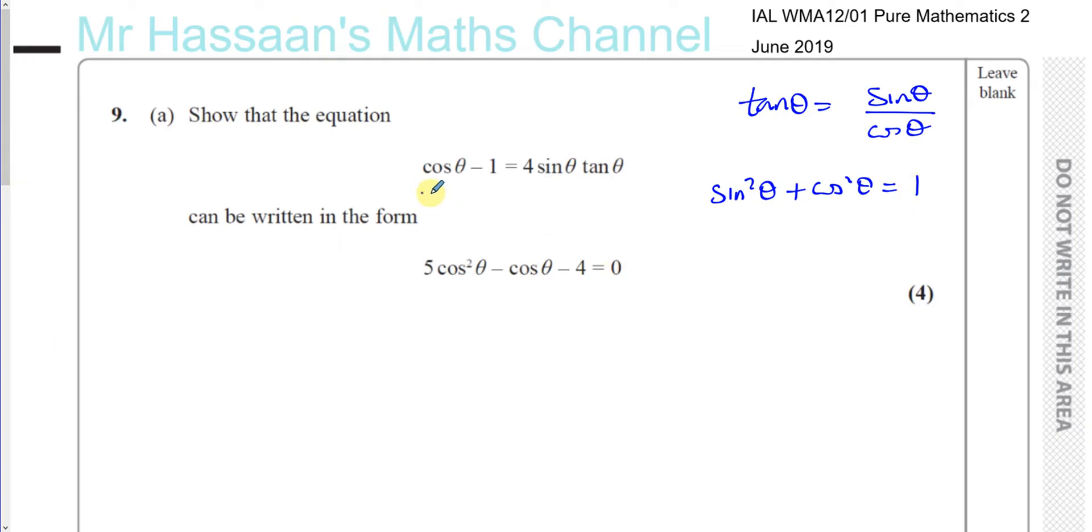So now, how are we going to change this into this form? Well, we can't really do anything with cosine theta and sine theta right now, but what we can do is change tan theta into the form of sine theta over cosine theta. Sometimes in these questions, you can't see the whole road ahead of you, how you're going to get from there to there. But you just take one step at a time, and you'll see that you'll be getting there. So the right track here would be saying, let's change tan theta into sine theta over cosine theta. So you have cosine theta minus 1 equals 4 times sine theta times sine theta divided by cosine theta.